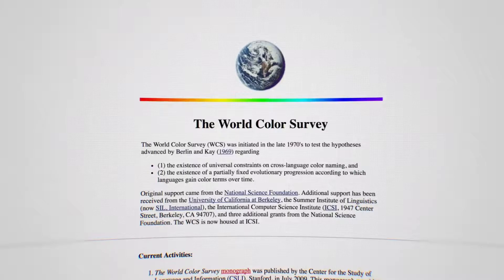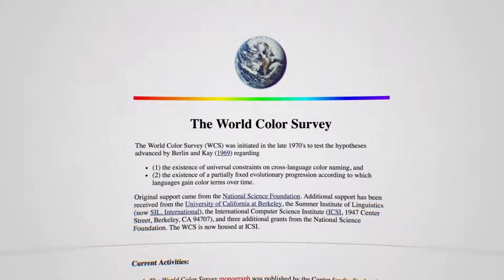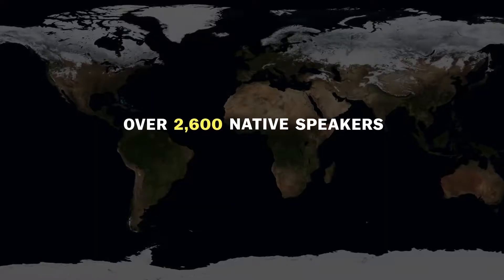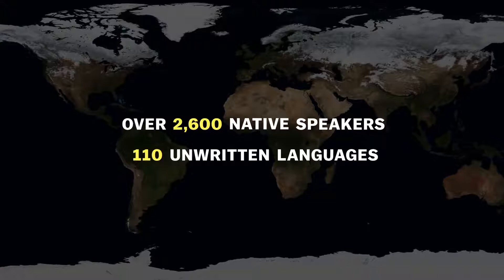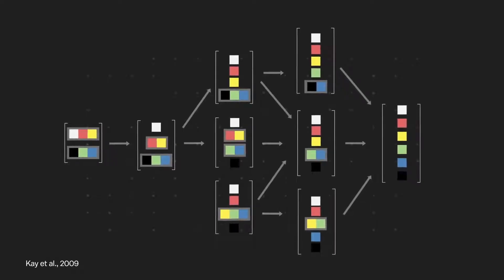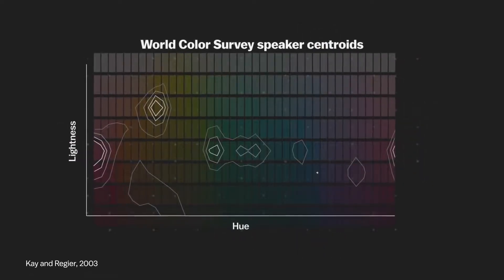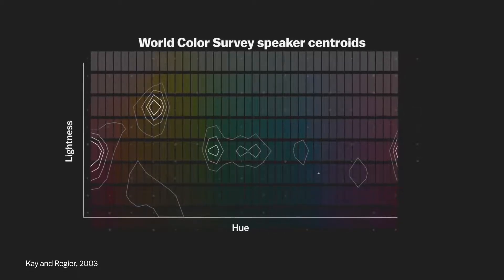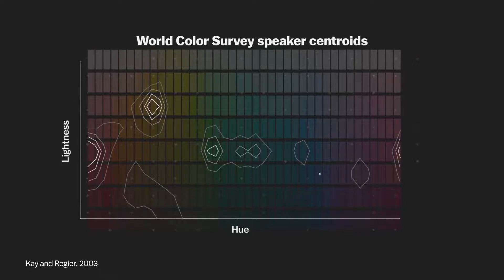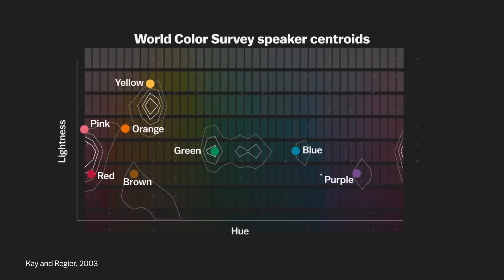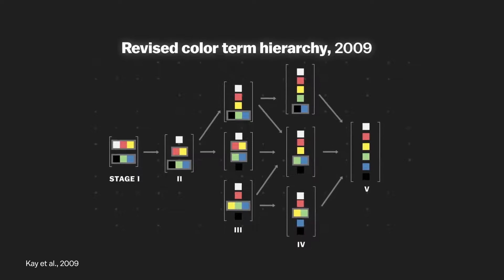But by the late 1970s, Berlin and Kay had a response for the critics — they called it the World Color Survey. They conducted the same labeling test on over 2,600 native speakers of 110 unwritten languages from non-industrialized societies. They found that with some tweaks, the color hierarchy still checked out: 83% of the languages fit into the hierarchy. When they averaged the center point of where each speaker labeled each color, they wound up with a sort of heat map, and those clusters matched pretty closely to the English speakers' averages. As Paul Kay puts it: most languages make cuts in the same place — some languages make fewer cuts than others. These color stages are widespread throughout the world.